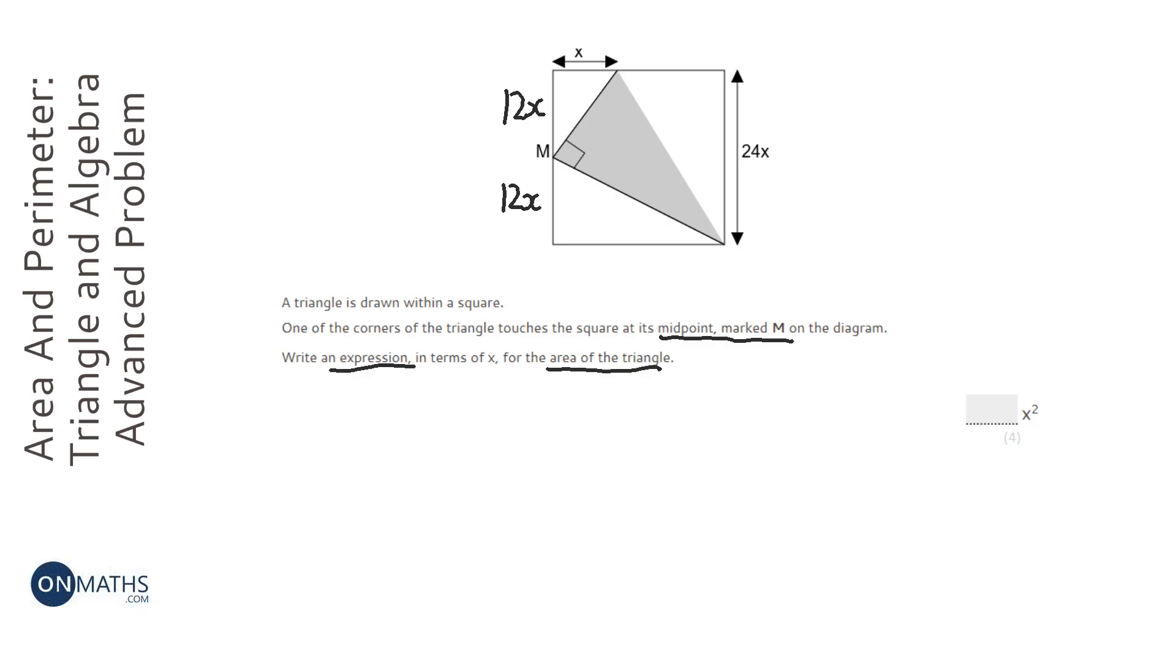Now, the second most important thing to realize is that it's a square, so the base and the height of the square are going to be equal. Therefore it's going to be 24x across the bottom here, and we've used up an x at the top left bit, so we're going to have 23x left over.